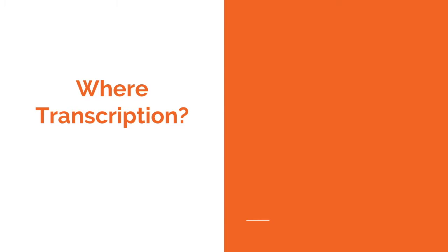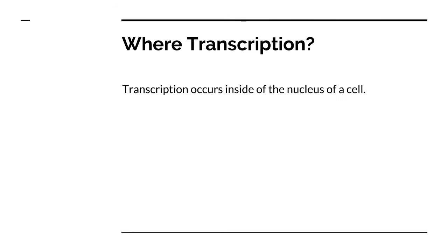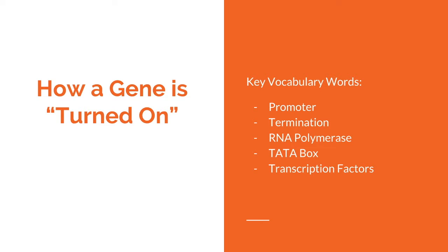Where does transcription occur? Transcription occurs inside of the nucleus of the cell. How a gene is turned on. Some keywords are RNA polymerase, promoter, TATA box, and transcription factors.